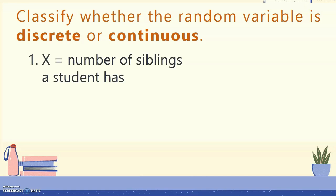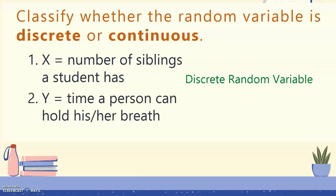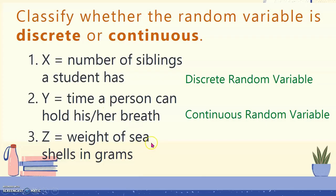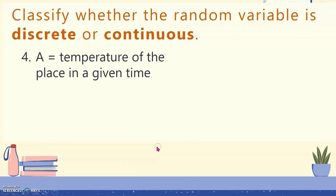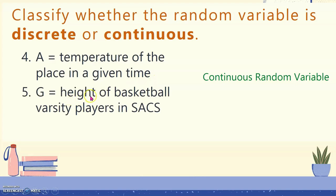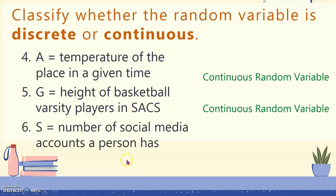Number 1: X is the number of siblings a student has — discrete random variable. Number 2: Y is the time a person can hold his or her breath — continuous random variable. Number 3: Z is the weight of seashells in grams — continuous random variable. Number 4: A is the temperature of a place at a given time — continuous random variable. Number 5: G is the height of basketball varsity players — continuous random variable. Number 6: S is the number of social media accounts a person has — discrete random variable.